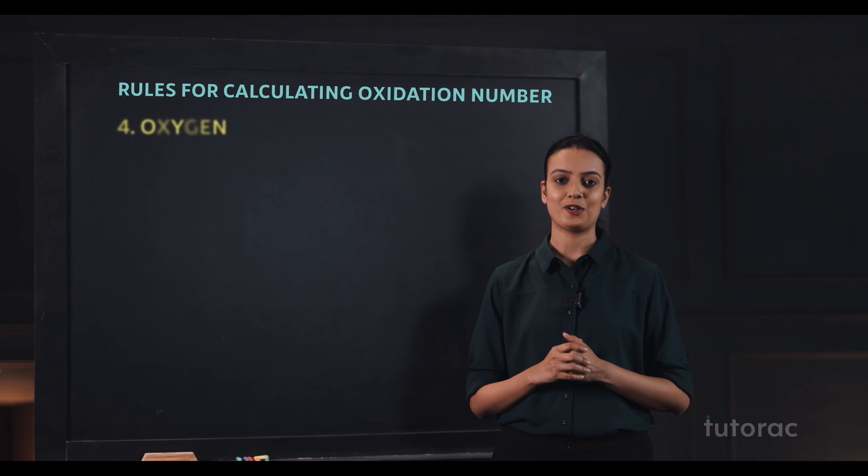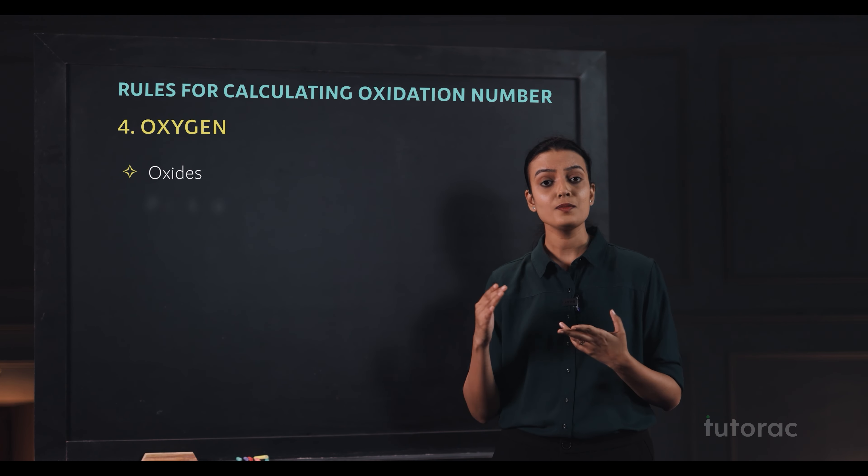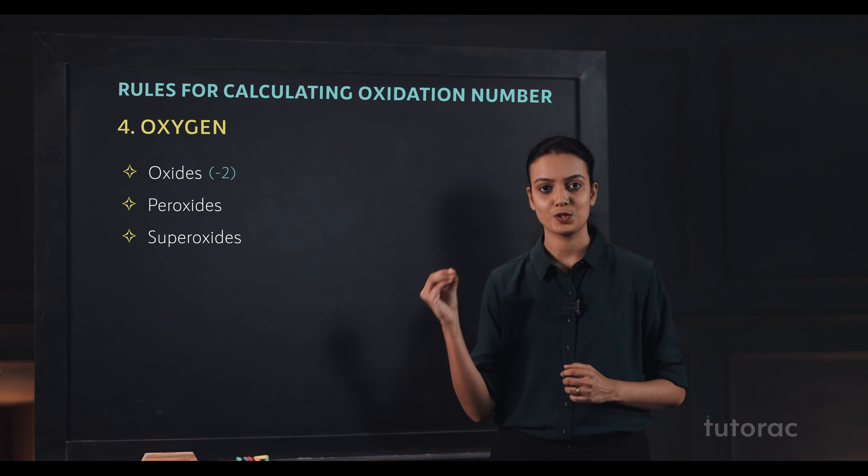Coming to oxygen. Oxygen can be present in 3 types: in oxides, in peroxides and in superoxides. When it is present in form of oxide, it exhibits an oxidation number of minus 2.